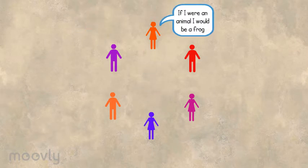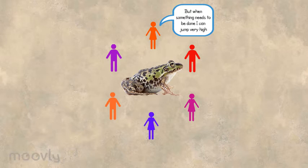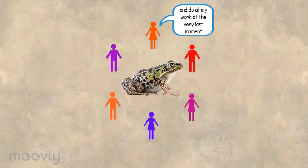If I were an animal, I would be a frog. I can sit still and do nothing for a very long time, but when something needs to be done, I can jump very high and do all my work at the very last moment.